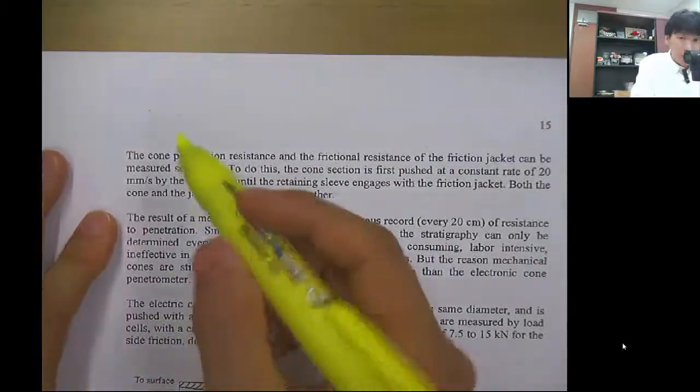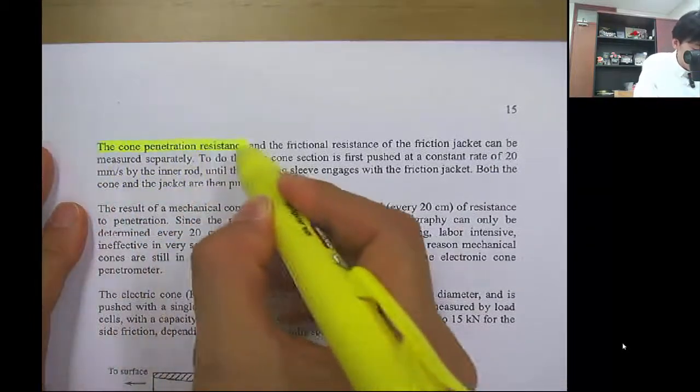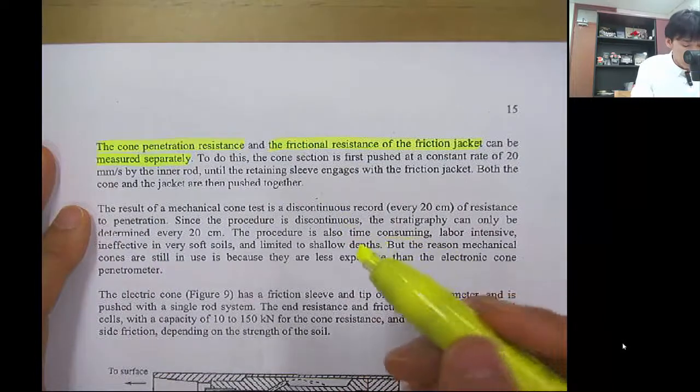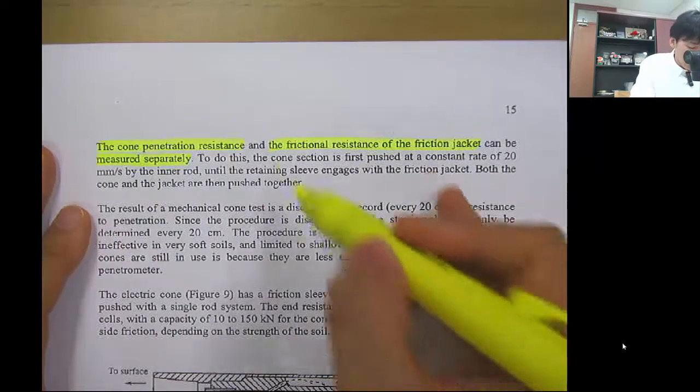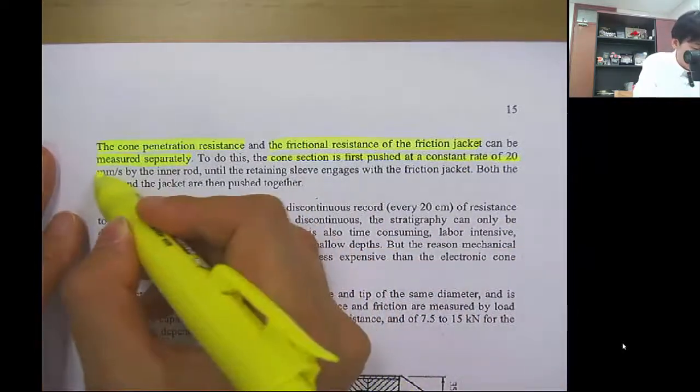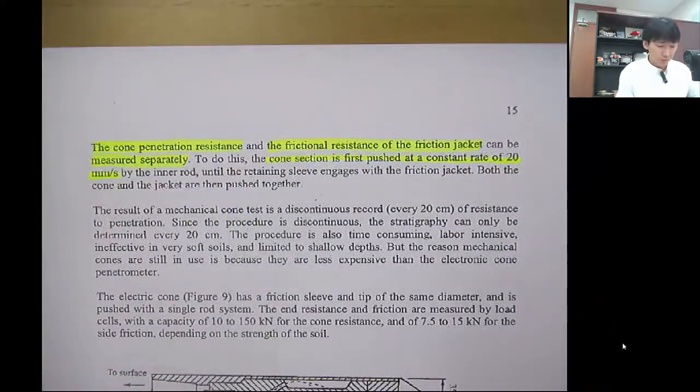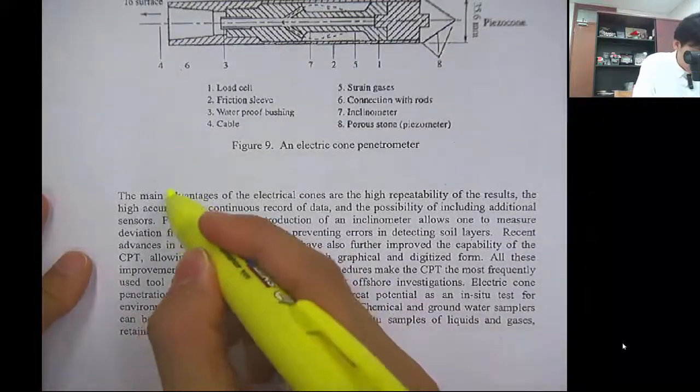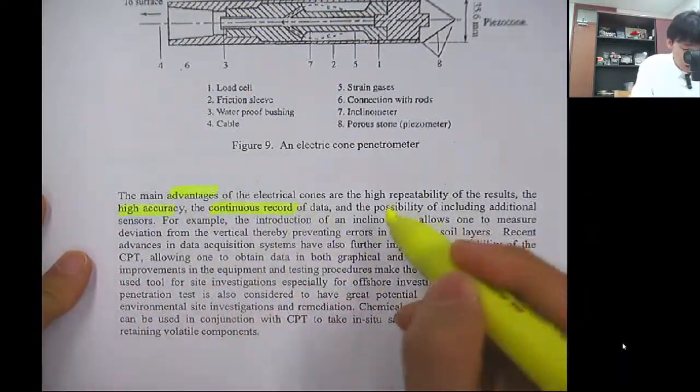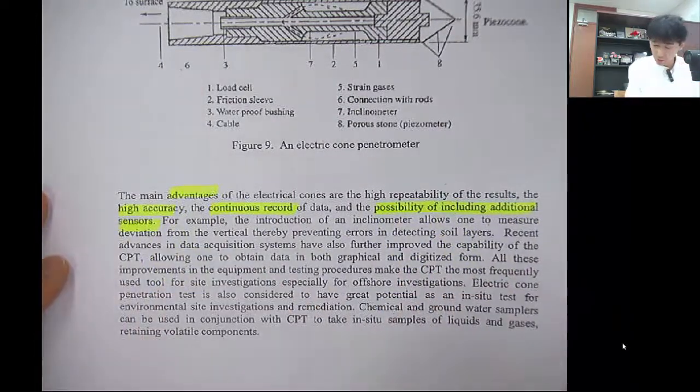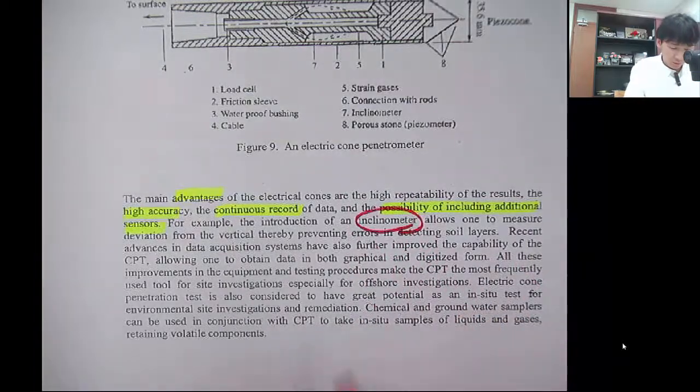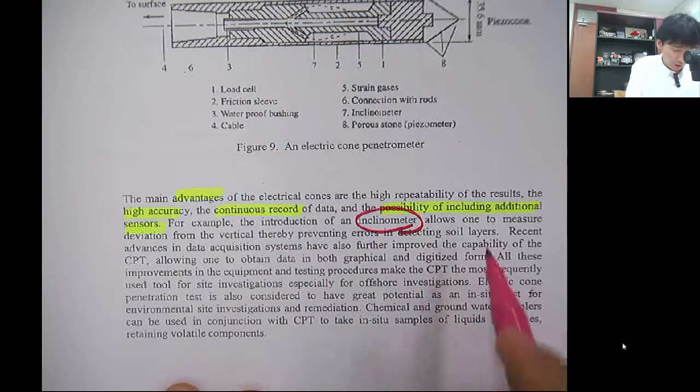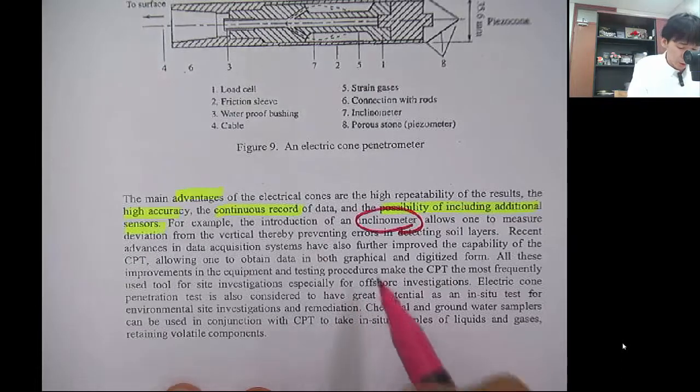Here, the cone penetration resistance, the tip resistance, and the frictional resistance of the friction jacket can be measured separately but at the same time. The cone section is pushed at a constant rate of 20 mm per second. The advantages are high accuracy, continuous data recording, and possibility of including additional sensors. People use inclinometers to measure deviation from vertical, thereby preventing errors in detecting soil layers. It is popularly used in offshore investigation.